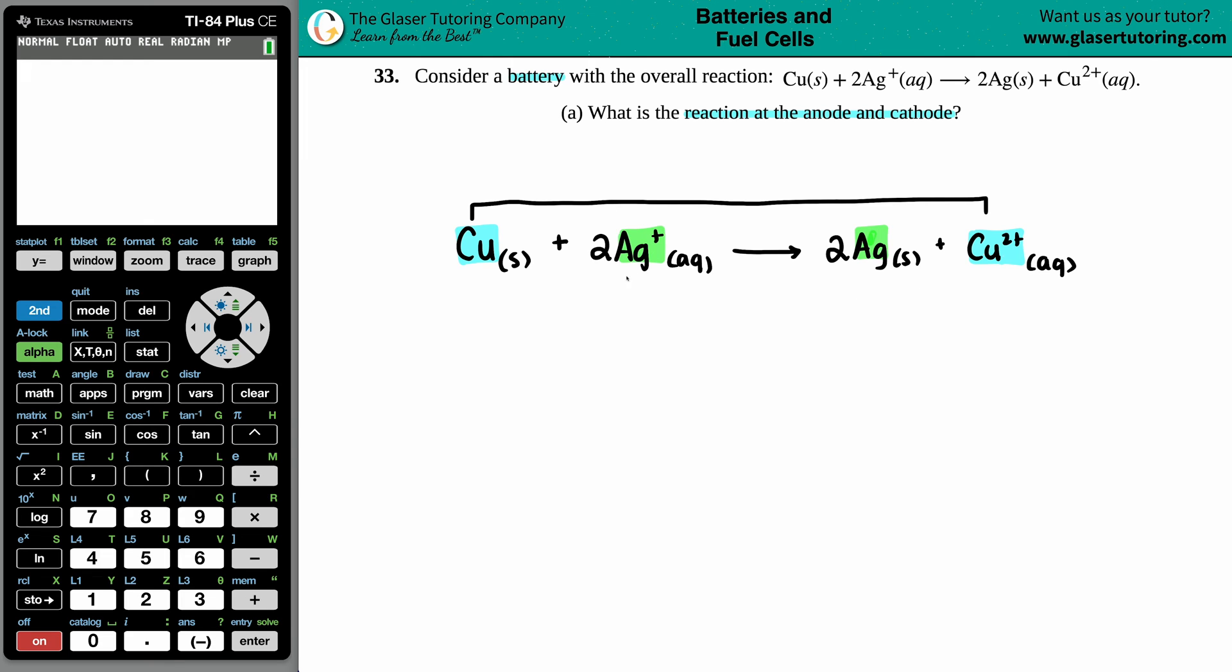Doesn't matter which one you write first. So I'll just write Cu solid yields Cu2+ aqueous. And then I have 2Ag+ aqueous yields 2Ag solid.